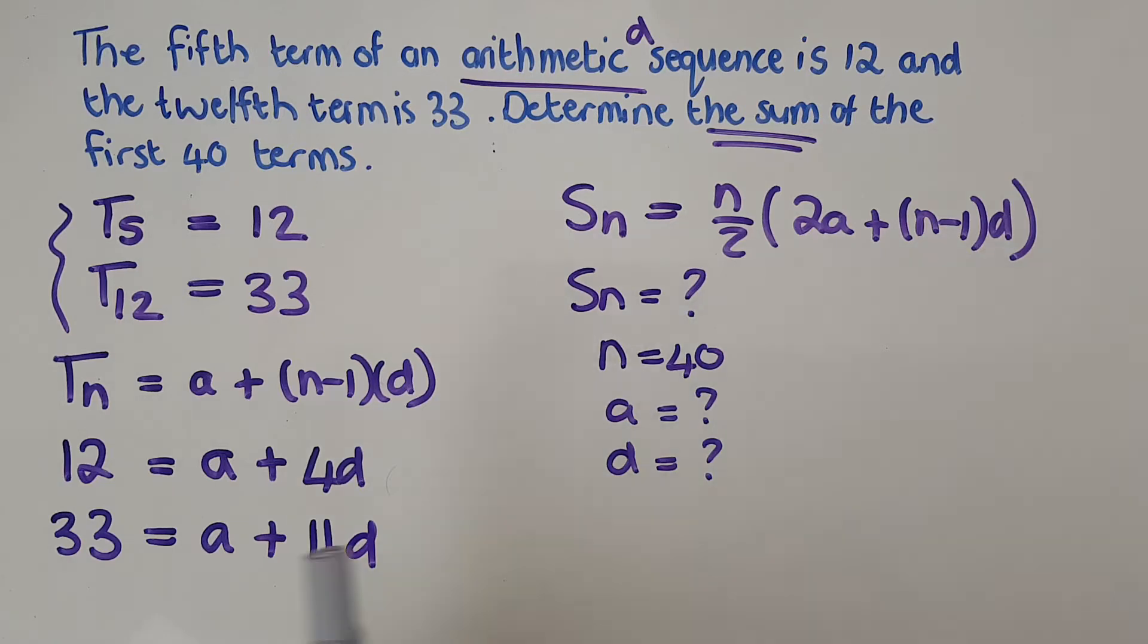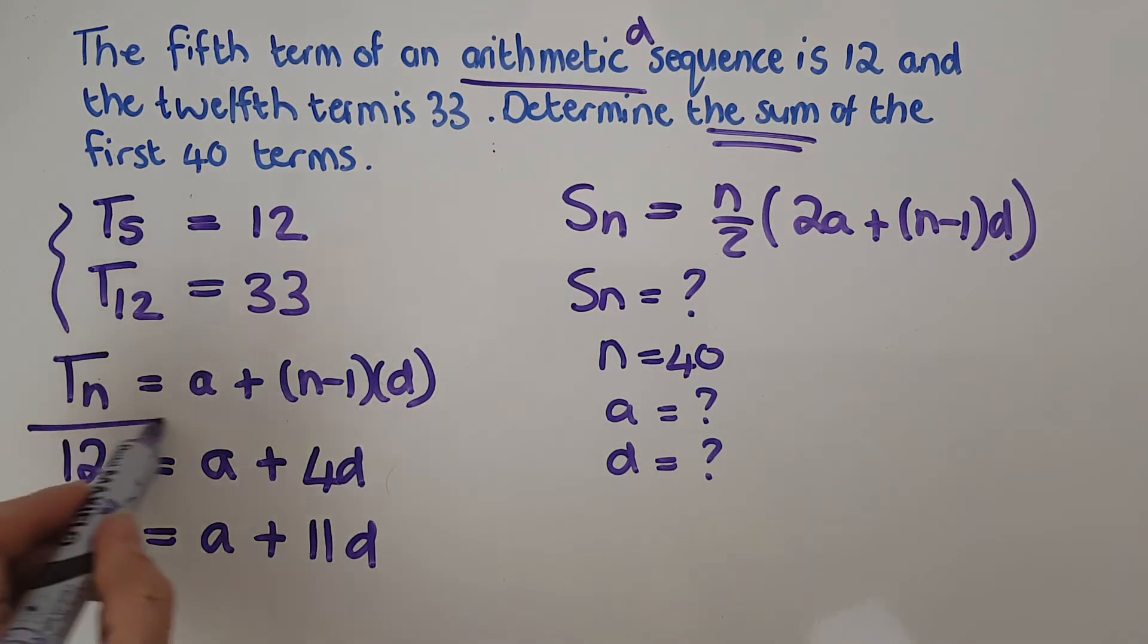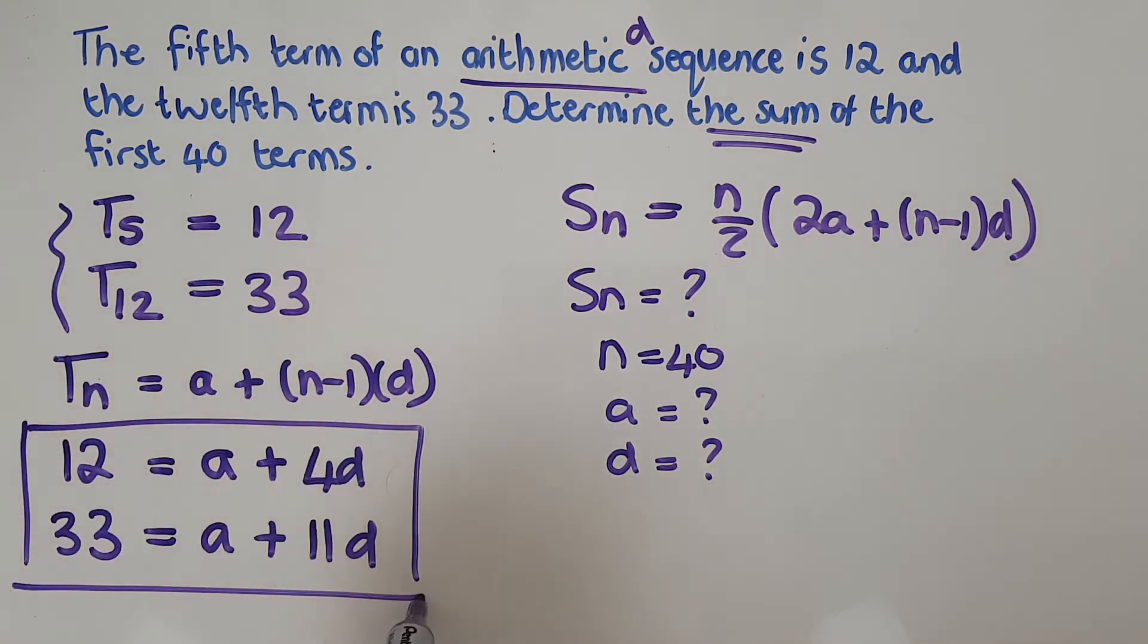11d. These guys are going to be used in my simultaneous equations. I'm a fan of substitution methods, so I'm going to solve for a. I'm going to say a equals 12 minus 4d, and a also equals 33